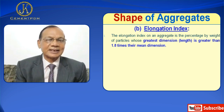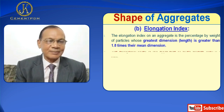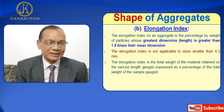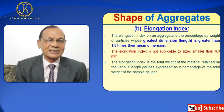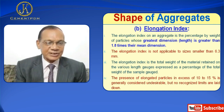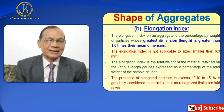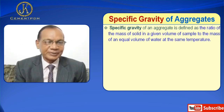The elongation index is the total weight of the material retained on the various length gauges expressed as a percentage of the total weight of the sample. The presence of elongated particles in excess of 10 to 15 percent is generally considered undesirable, but no recognized limits have been set.